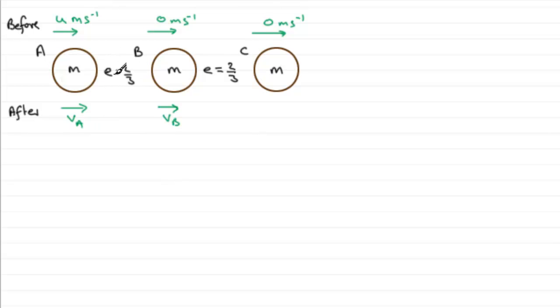We're also told that the coefficient of restitution between A and B and B and C is e equals two-thirds. So how are we going to work out these speeds of A and B after the impact? We're going to need to use the conservation of linear momentum and Newton's law of restitution, get two simultaneous equations with VA and VB in, and then just solve them.